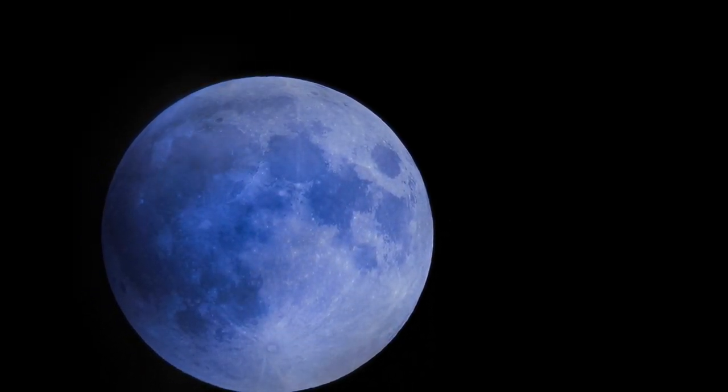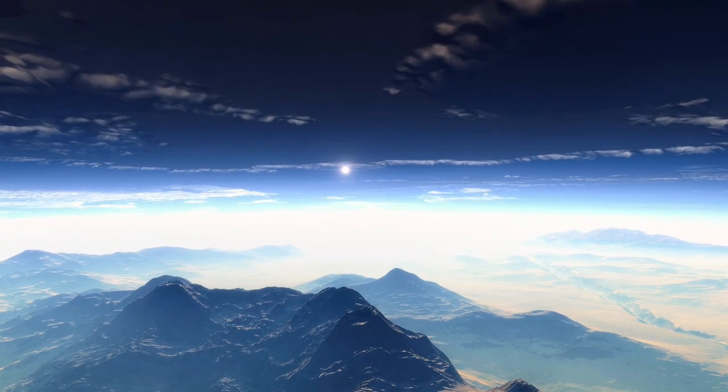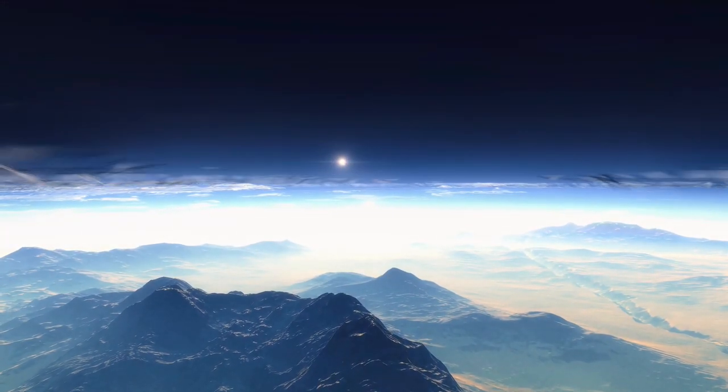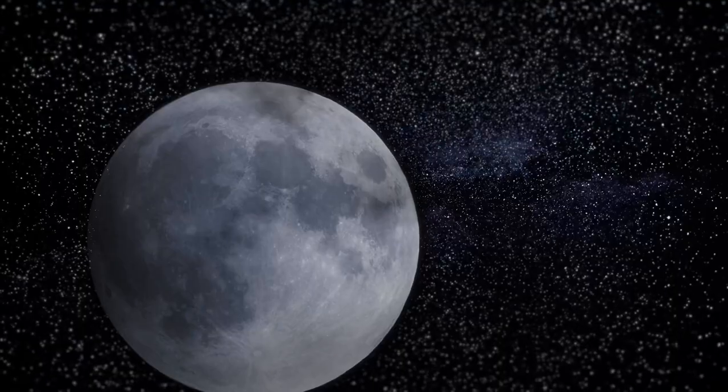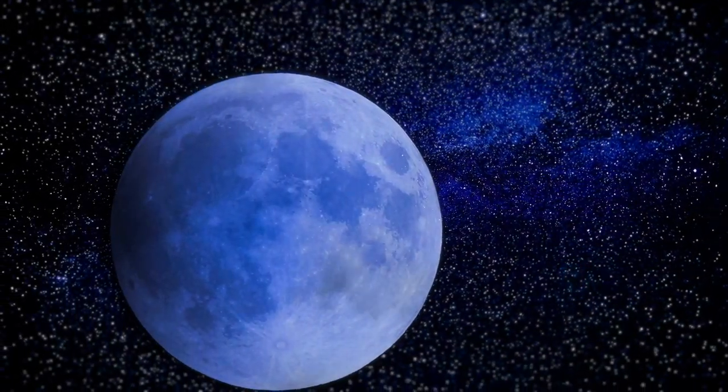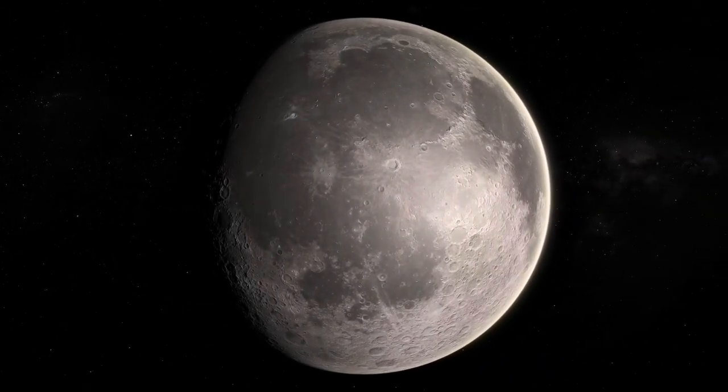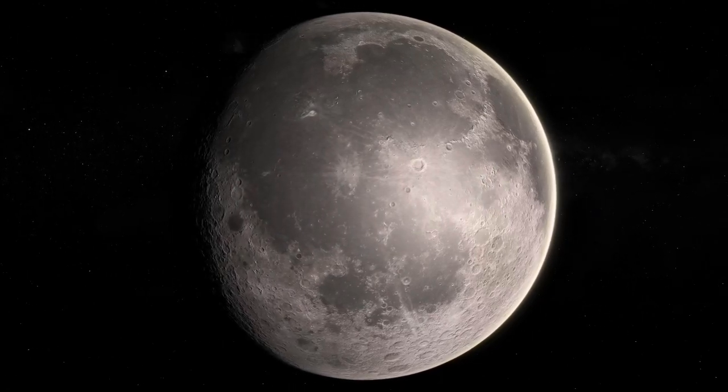However, in very rare cases, the moon can appear bluish in color due to certain atmospheric conditions, such as smoke or dust particles in the air. These particles can scatter the light, causing the moon to take on a bluish hue. But this phenomenon is not related to the occurrence of a blue moon, as defined by the calendar.